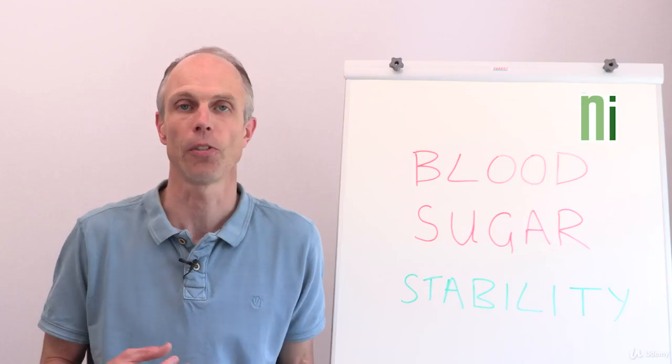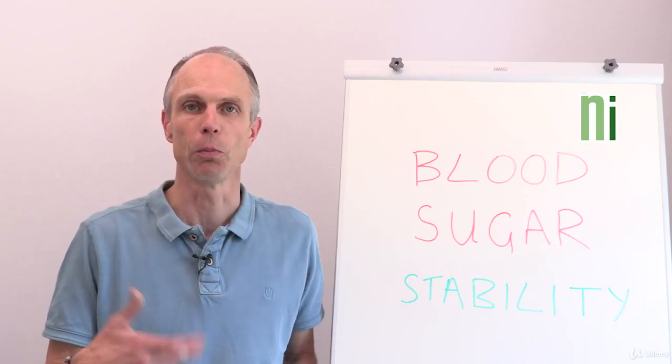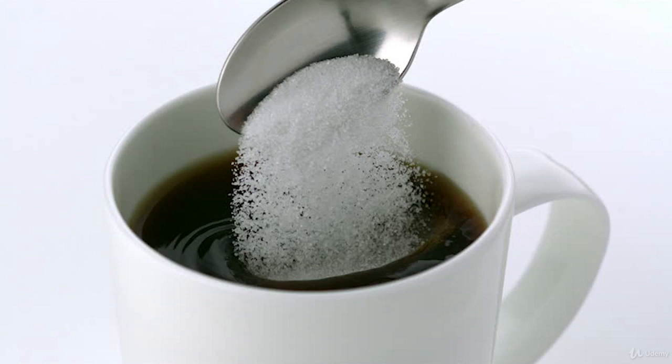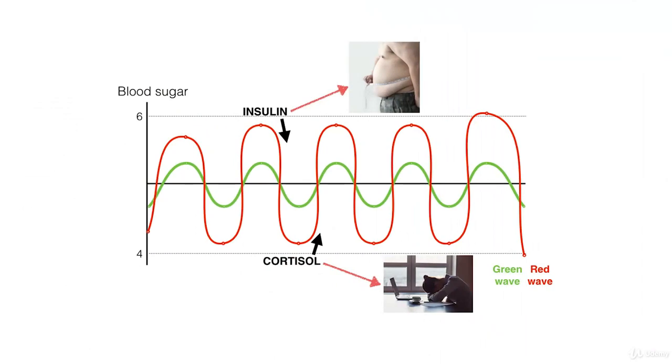Or you could just, like many people do, have some sugar or coffee - that afternoon 3pm slump. But sometimes when you do that, the blood sugar levels go too high, meaning that the insulin and cortisol essentially play bat and ball all day long.